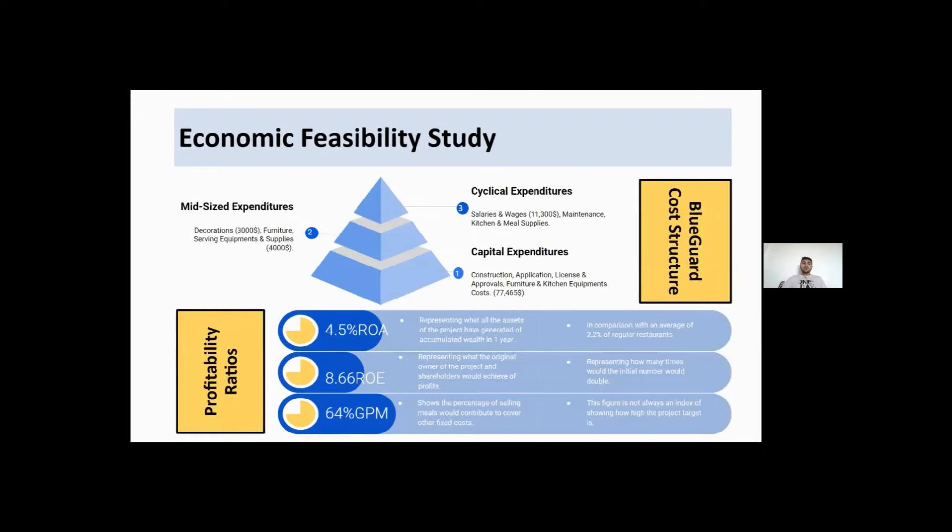When we come to economic feasibility study, we can see the cost structure of the project that is classified into three categories. The first one and the most important one is the capital expenditures, which are expenditures made only for once at the zero-week year and only for once, including the construction costs, the applications, the license, the approvals, furnitures, and kitchen equipment, all combined at a cost of $77,000.